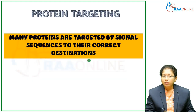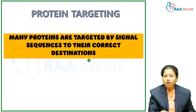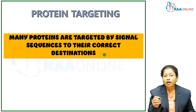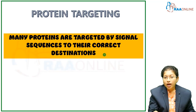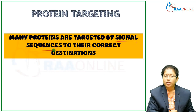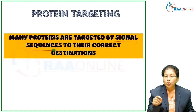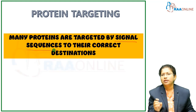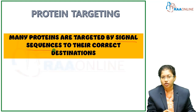Protein targeting means these proteins have to be transported to their correct destination. They are targeted by a signal sequence. When proteins are transported to their destination, you have to label an address — that is called a signal sequence. The signal sequence is nothing but an address to their destination.